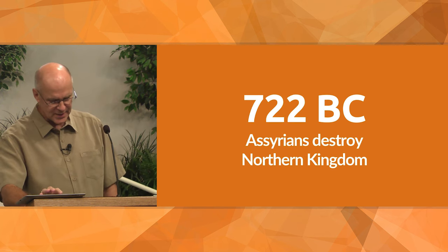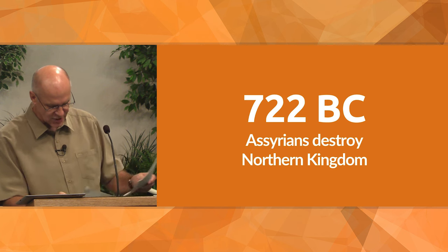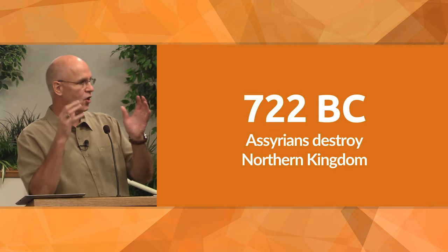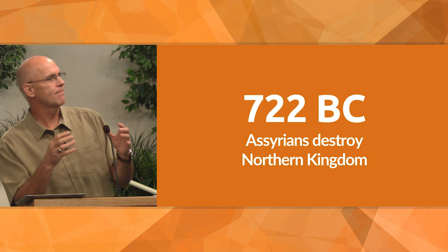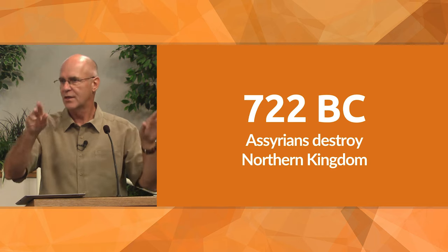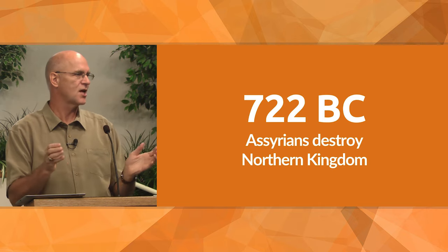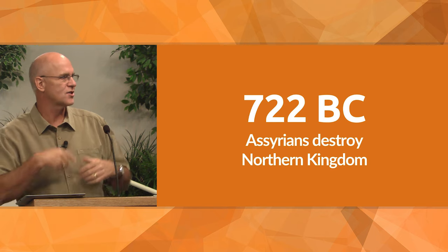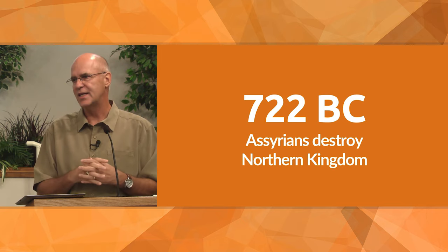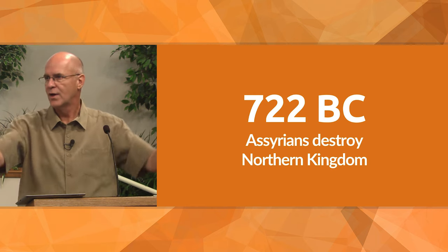In 722 BC, the Assyrians attacked and destroyed the northern kingdom and scattered the people throughout other nations, bringing many into exile into Assyria. That's how Assyria handled their conquests — they would conquer a nation and then spread the people out to other nations in order to dilute their nationalism by diluting their bloodlines. They would force a nation to intermarry with surrounding nations, with the idea that in several generations people would have less fidelity to the old ways. So that's exactly what they did to the Israelites, the northern tribes — they just scattered them among other nations.